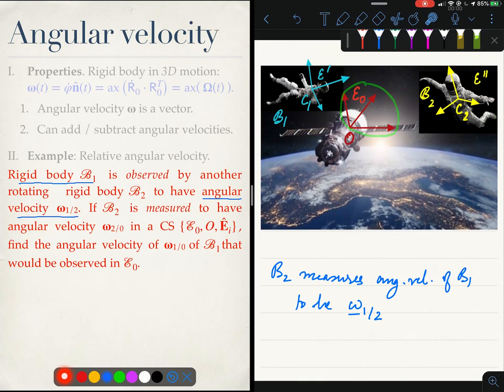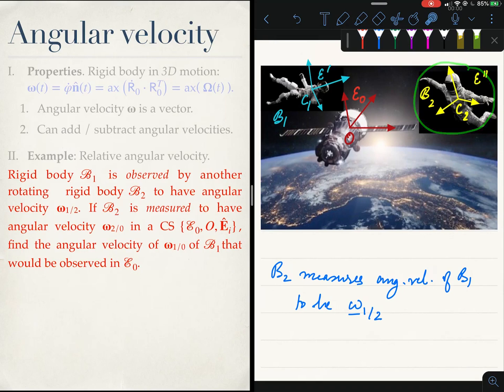At the same time this astronaut is being tracked by this spacecraft which has an attached body fixed coordinate system called E0. That is the E0 and the rate of change of orientation of the astronaut 2, which is B2, with respect to the spacecraft is given by omega 2 0.